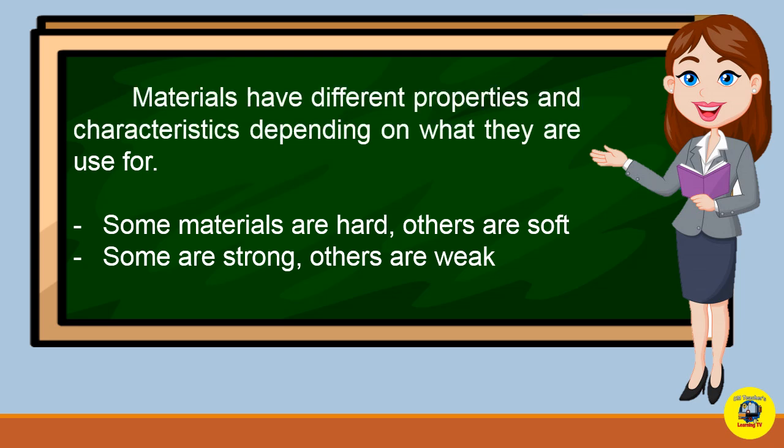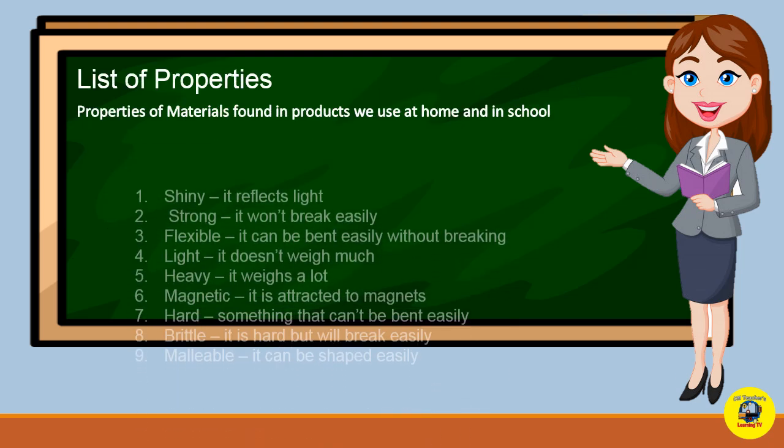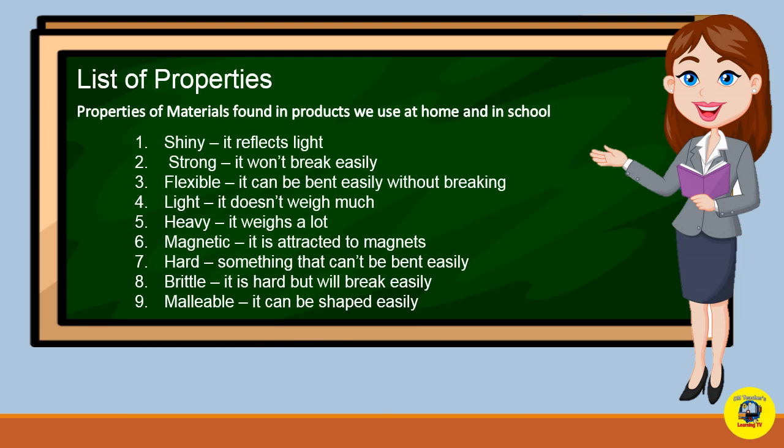Materials have different properties and characteristics depending on what they are used for. Some materials are hard while others are soft. Some are strong and others are weak. Here are the list of properties of materials found in products we use at home and in school.